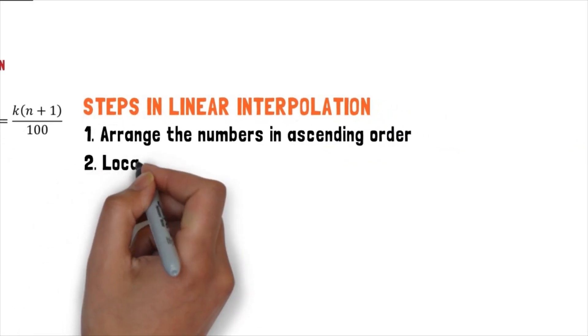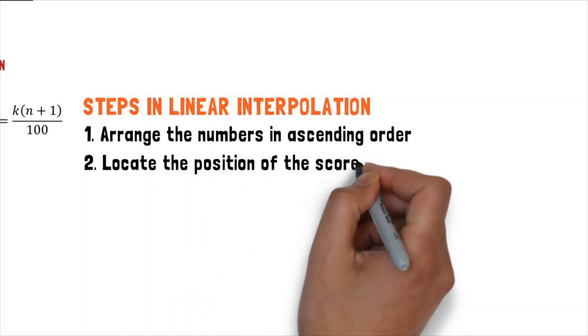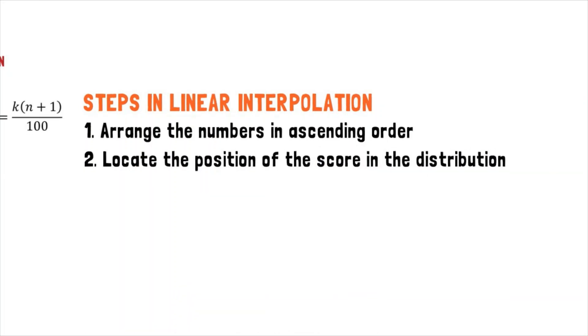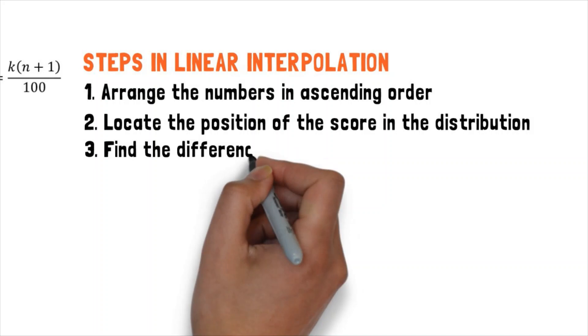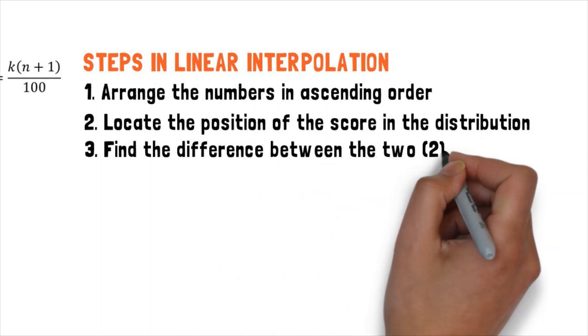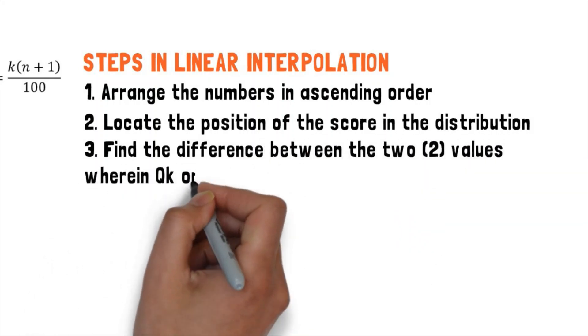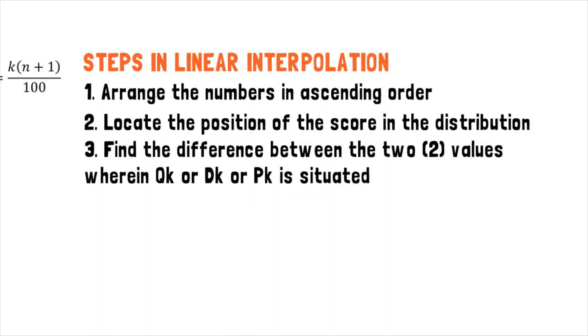Step 2, we are going to locate the position of the score in the distribution. Step 3, we will find the difference between the two values wherein Q sub k or D sub k or P sub k is situated.